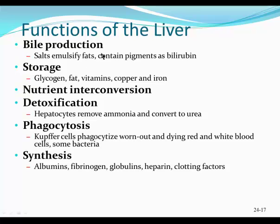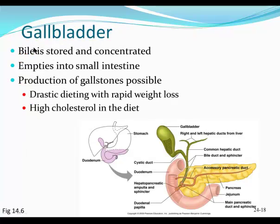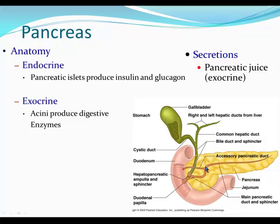The gallbladder stores bile, and when we eat something containing fat, that stimulates the gallbladder to release bile via the common bile duct to the duodenum to break down fat. Some people develop gallstones from a high-fat diet or from losing too much weight too quickly, and may end up needing their gallbladder removed. The pancreas's digestive job is to create and secrete enzymes released into the duodenum that break down proteins, sugars, fats, and nucleic acids into tiny molecules that can be absorbed by the walls of the small intestine. The pancreas is essential for digesting food products into absorbable molecules.